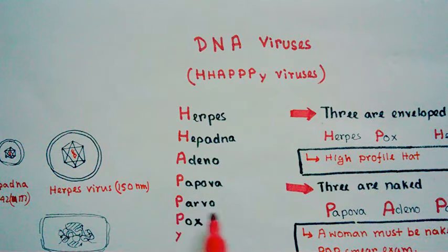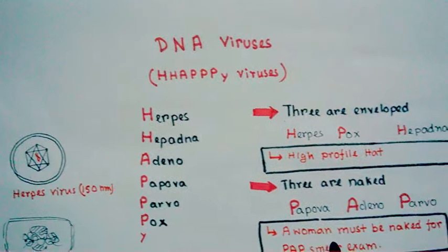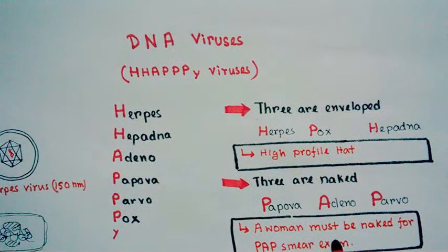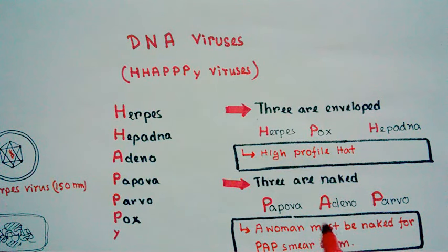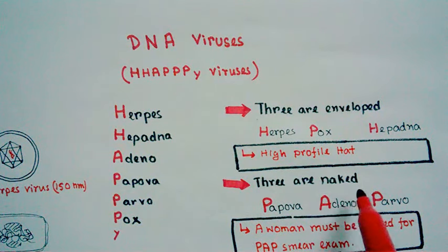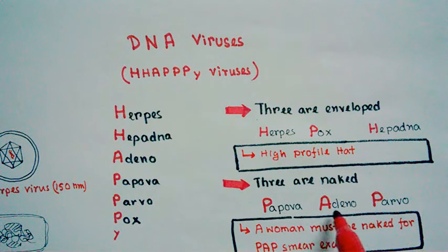...papova, parvo, and pox. Now here comes the structure — let's see which viruses are enveloped and which are naked (non-enveloped). Three viruses are naked, meaning they don't have an envelope: papova, adeno, and parvo.